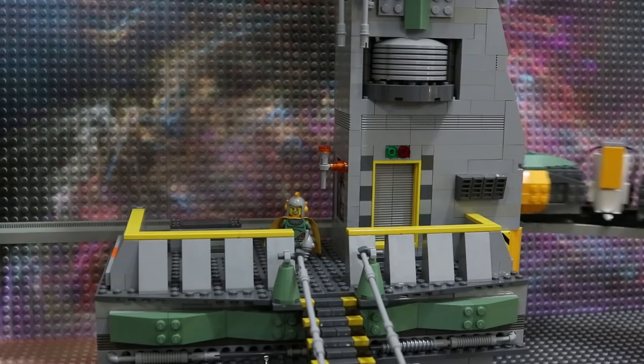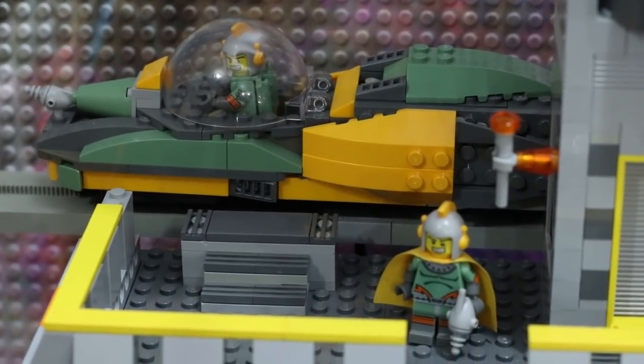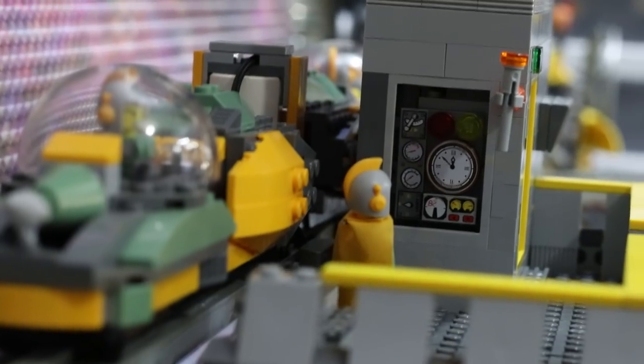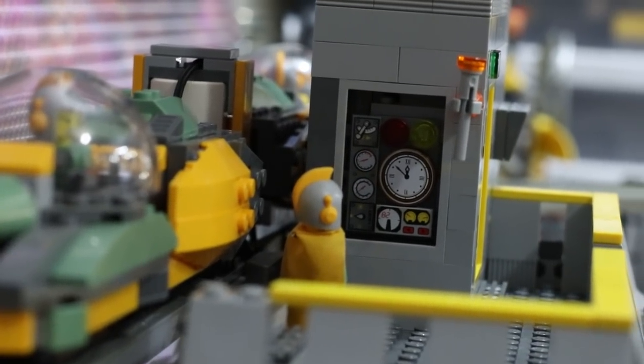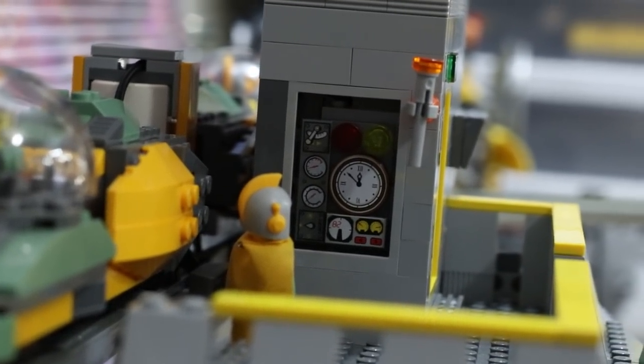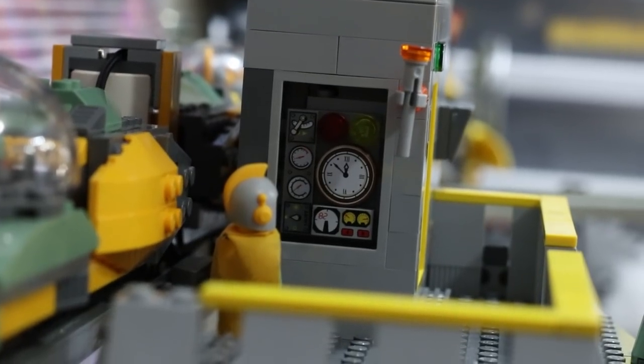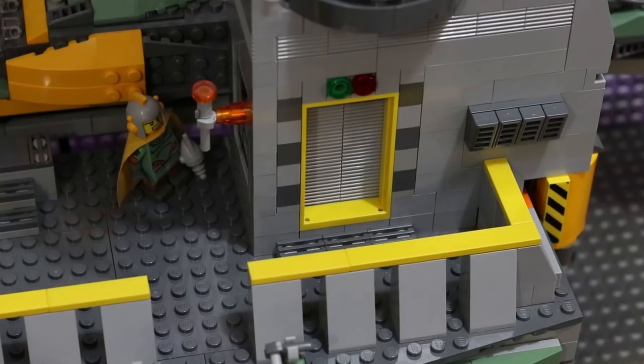When the monorail stops at the station, a set of stairs can be used to deboard. From this deck of the station, minifigures can check a bank of gauges on the exterior of the tower. I thought it would be fun to put an old-fashioned analog clock in this cluster as a nod to the types of classic science fiction that inspired this Retro Spaceman minifigure.